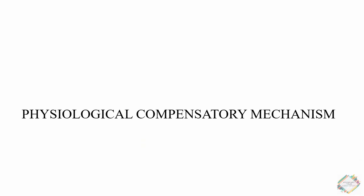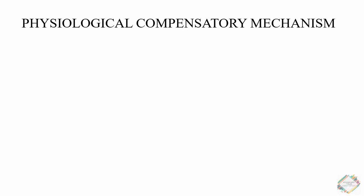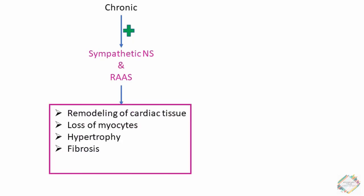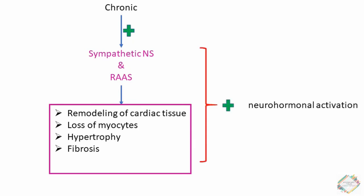The physiologic compensatory mechanisms responsible for the progression of heart failure include chronic activation of the sympathetic nervous system and the RAS system, which are associated with remodeling of cardiac tissue, loss of myocytes, hypertrophy, and fibrosis. This causes additional neurohormonal activation, creating a vicious cycle that, if left untreated, leads to death.